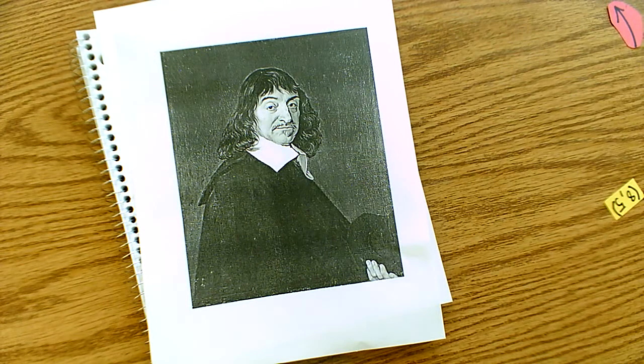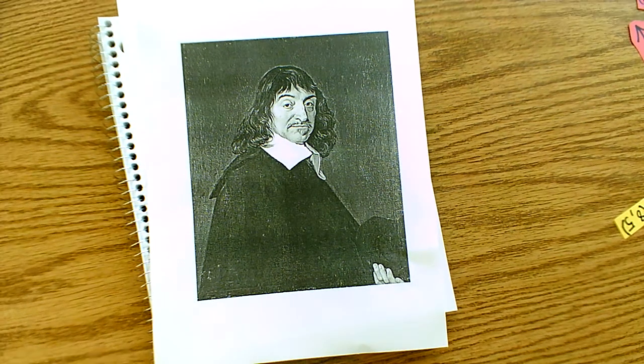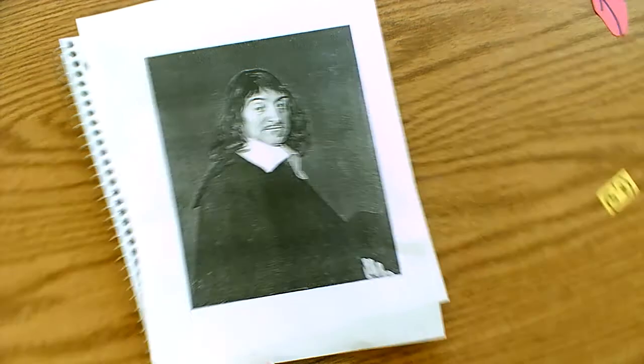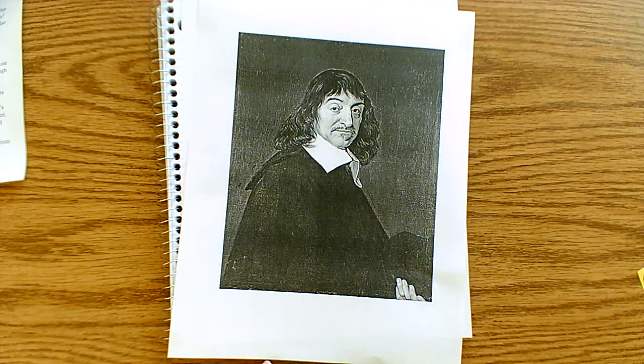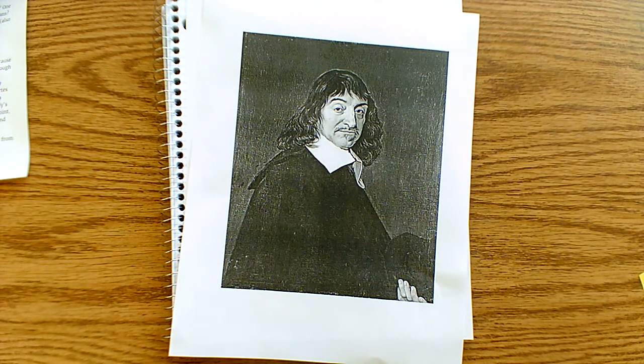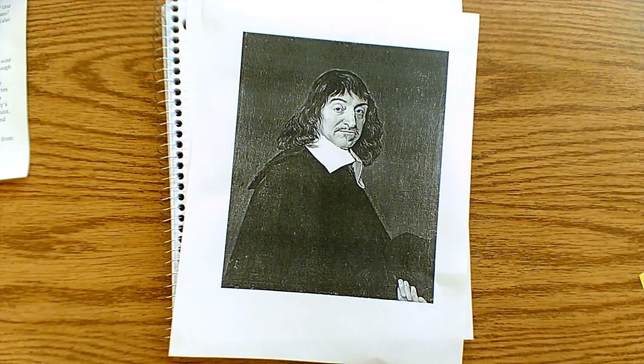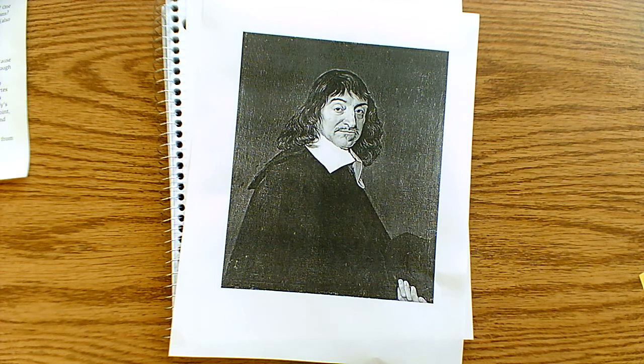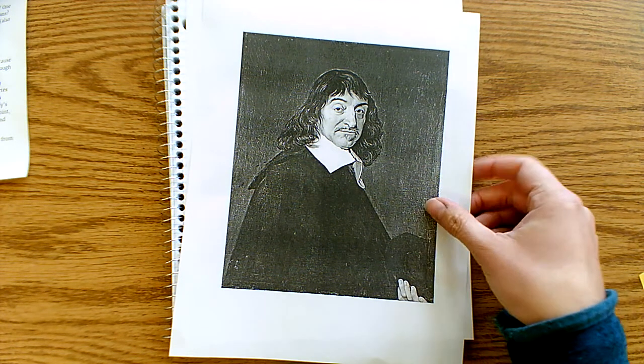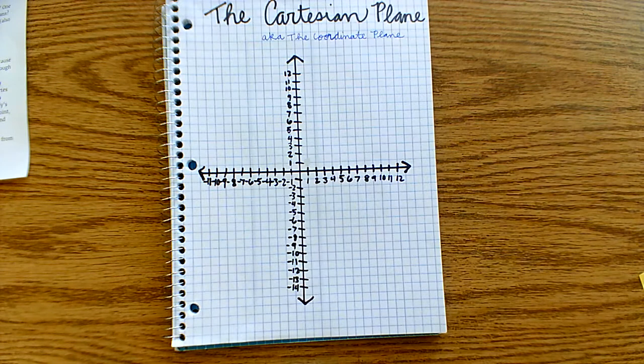He also published a book called Discourse de la Method, or Discourse on Method. One of the appendices of this book was called La Geometrie. And what do you think that means? Geometry. It was in La Geometrie that Descartes introduced something called the Cartesian plane to the world. And now we often call this the coordinate plane.